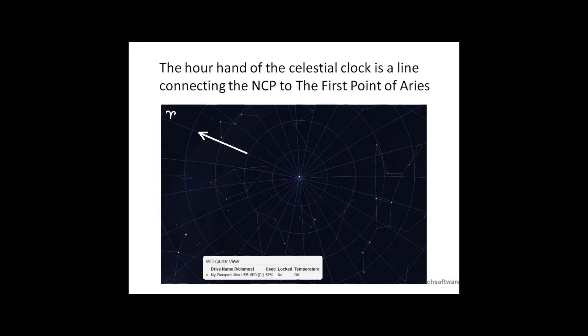The hour hand of the celestial clock is a line connecting the northern celestial pole to the first point of Aries. Notice the symbol for the first point of Aries looks like the horns of a ram. And if we draw a line from the NCP to the first point of Aries, this is the hour hand of our celestial clock.